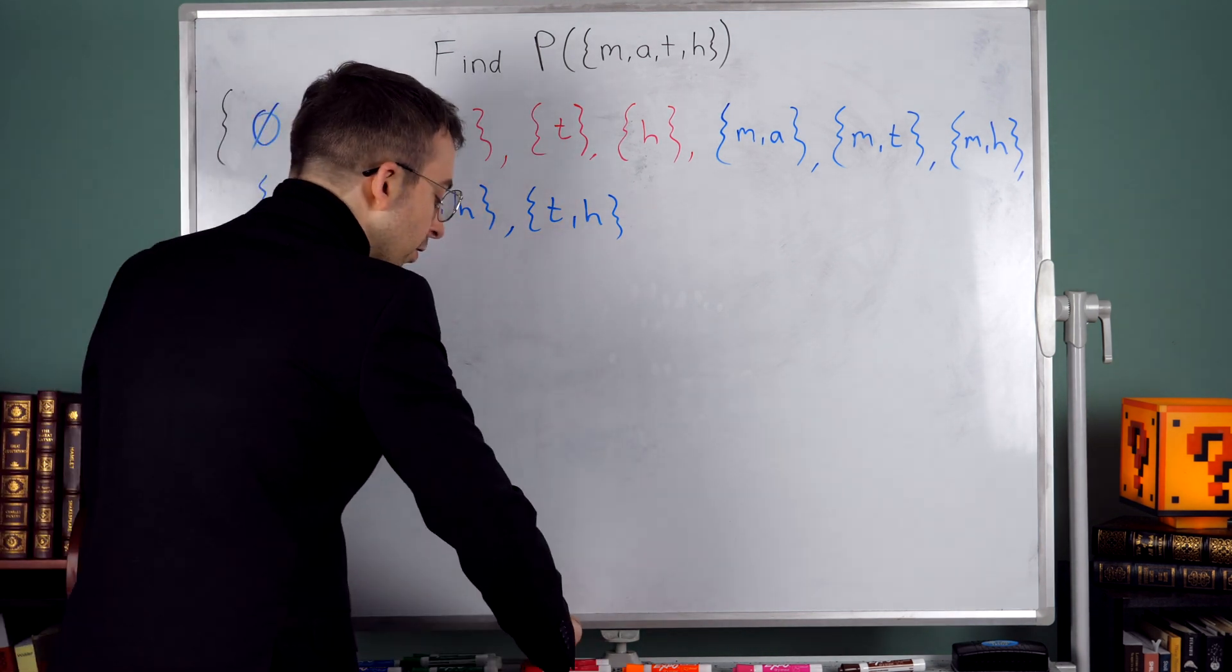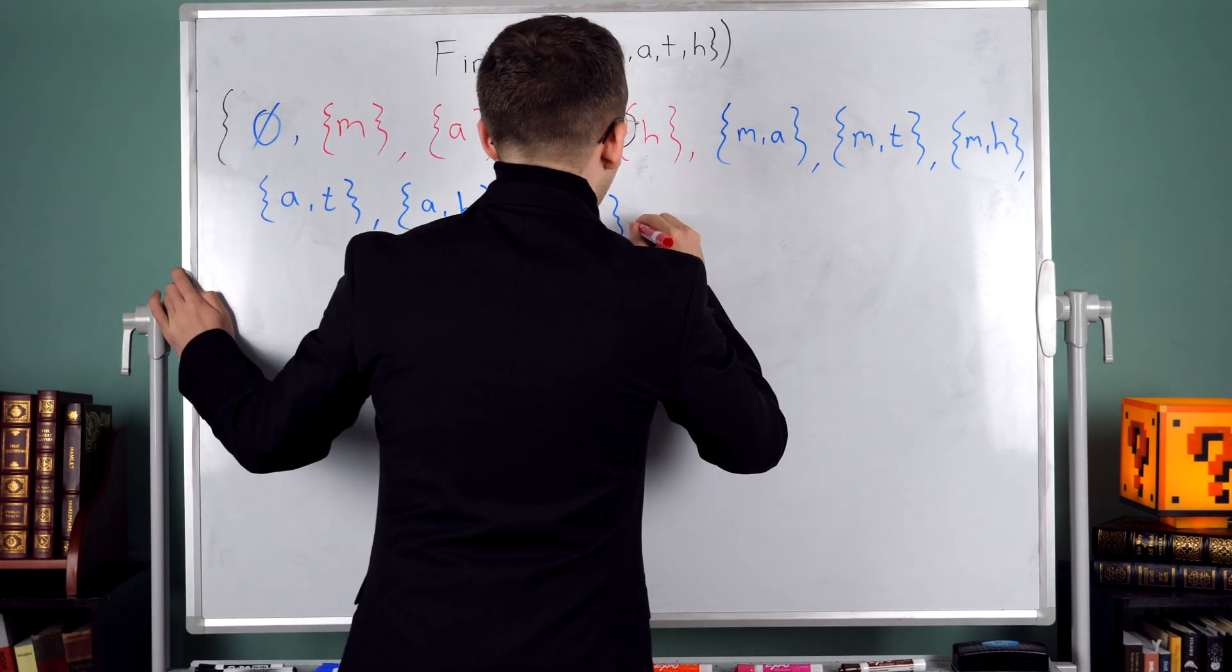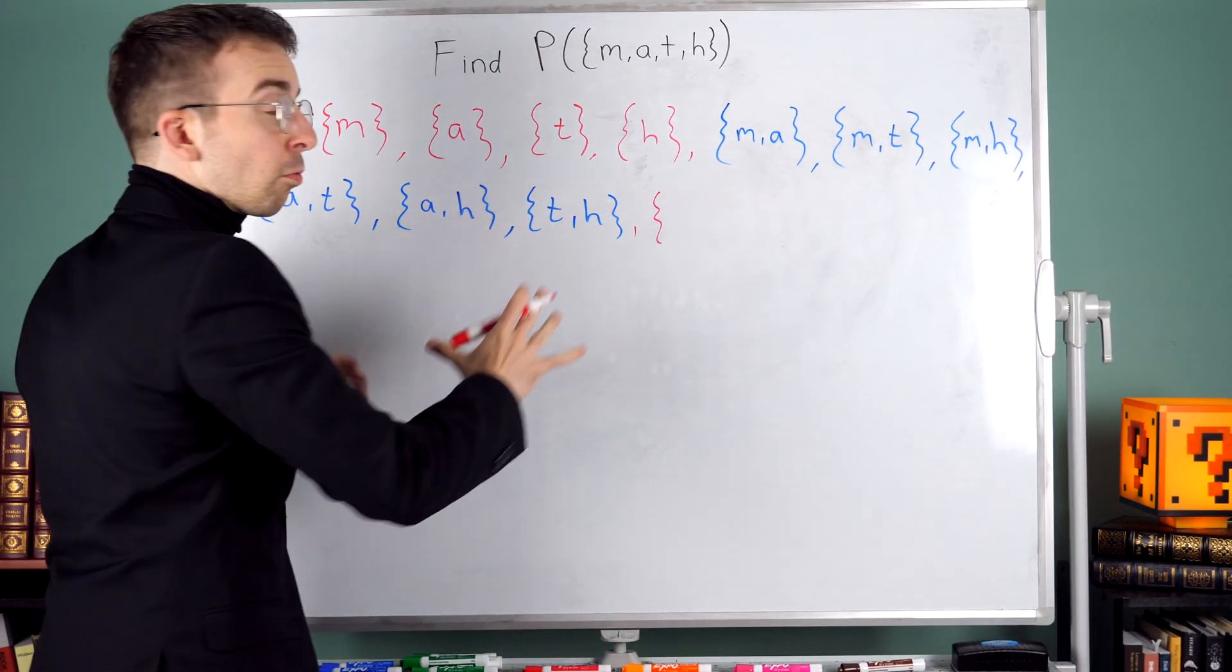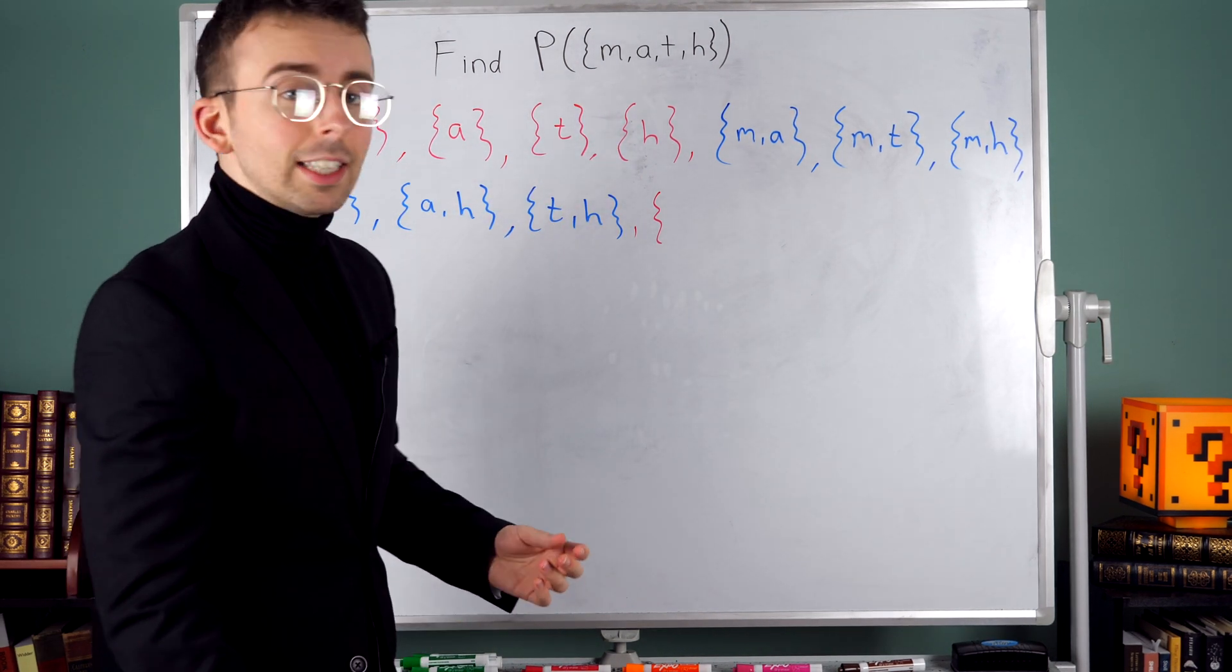Let's move on to the subsets with three elements, and again I'm going to switch back to red just to help you read all of this. What's the first subset that you think of that's got three elements?